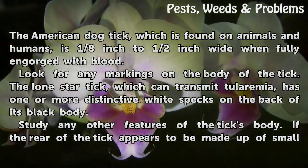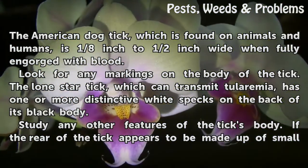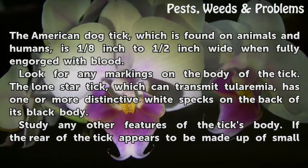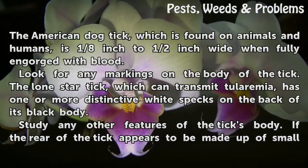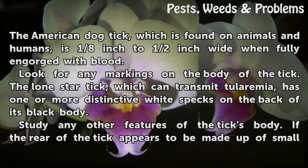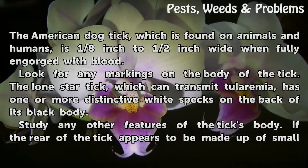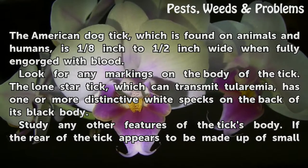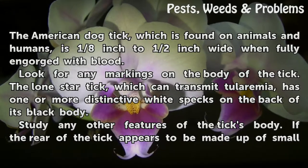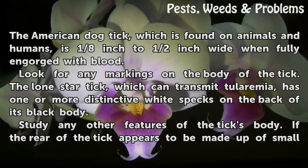Look for any markings on the body of the tick. The lone star tick, which can transmit tularemia, has one or more distinctive white specks on the back of its black body.